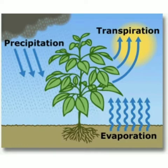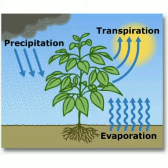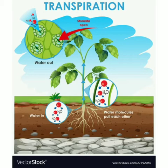The root keeps absorbing water, but not all the water it absorbs is needed by the plant. If there is excess water, the leaves will start rotting. So the excess water should be removed from the plant, and this removal of excess water through the leaf is called transpiration.